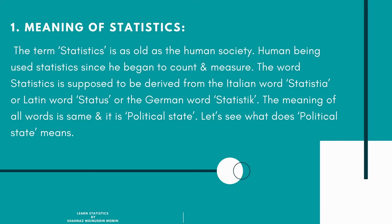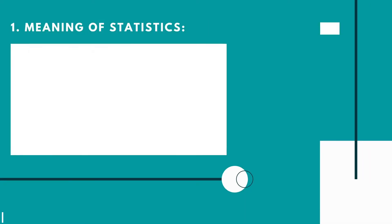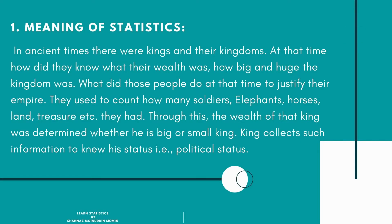The meaning of all these words is 'political state.' In ancient times, there were kings and their kingdoms. At that time, how did they know what their wealth was, how big the kingdom was? They used to count how many soldiers, elephants, horses, land, and treasure they had. Through this, the wealth of that kingdom was determined, and the king collected such information to know his statistical status.